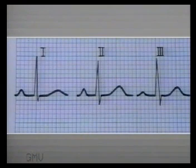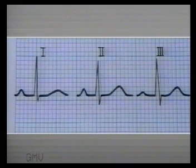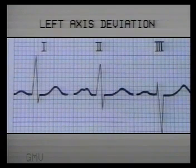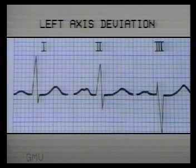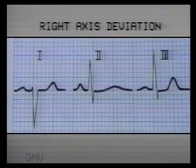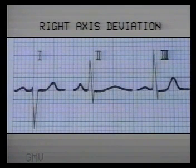Axis deviation: to look for deviation of the electrical axis of the heart, we must study leads 1 and 3. Normally, QRS complexes are predominantly upward in both these leads. In left axis deviation, there is a prominent R wave in lead 1 and a prominent negative deflection — either Q or S — in lead 3. In right axis deviation, there is a prominent negative deflection in lead 1 and a prominent R wave in lead 3.